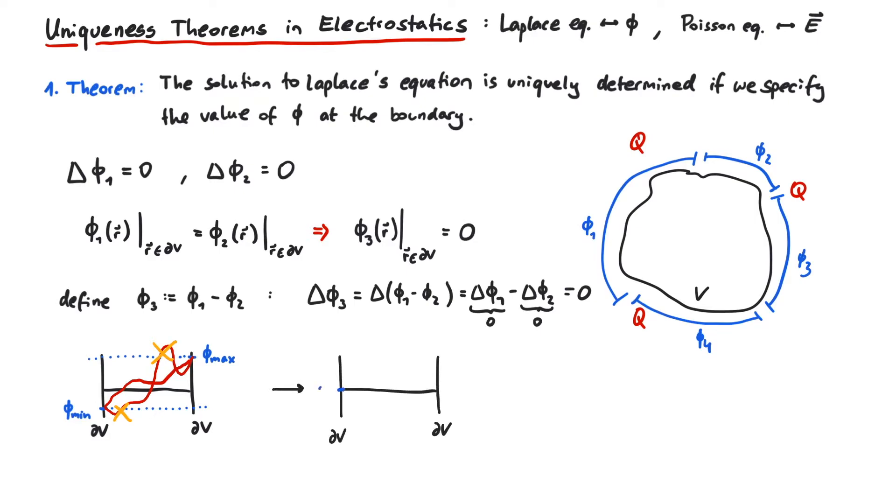So if zero is its largest value, and at the same time its smallest value, then phi3 is itself zero everywhere. And this means that phi1 and phi2 are in fact exactly the same functions, and the solution to the Laplace equation is unique.